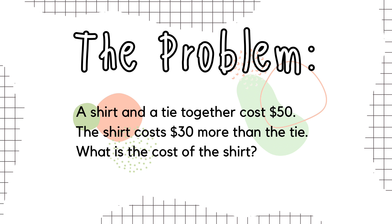The problem is: a shirt and a tie together cost $50. The shirt costs $30 more than the tie. So, what is the cost of the shirt?